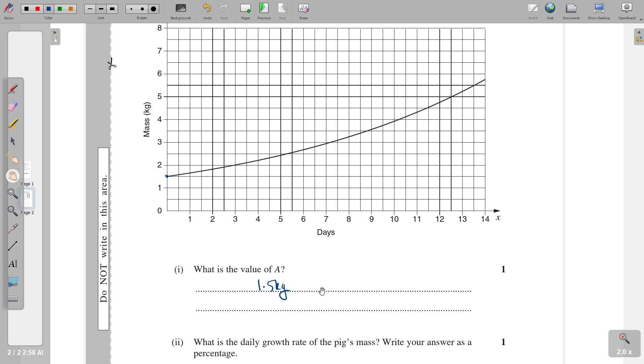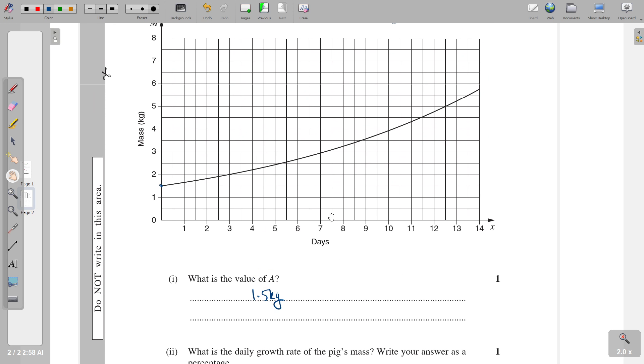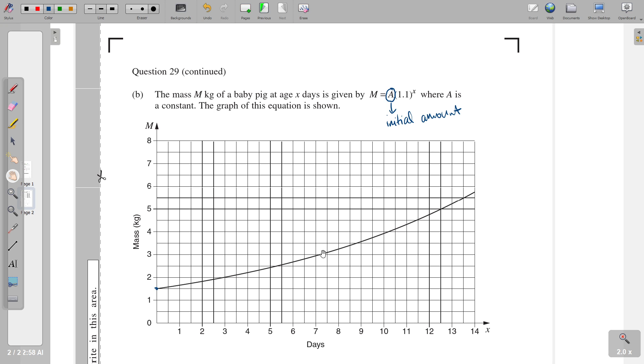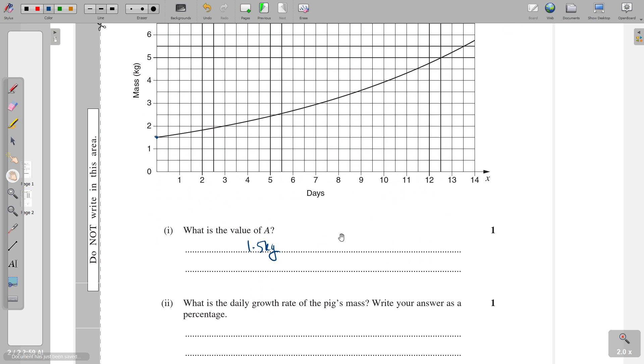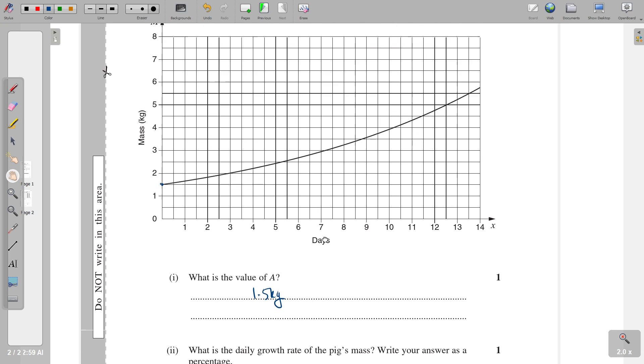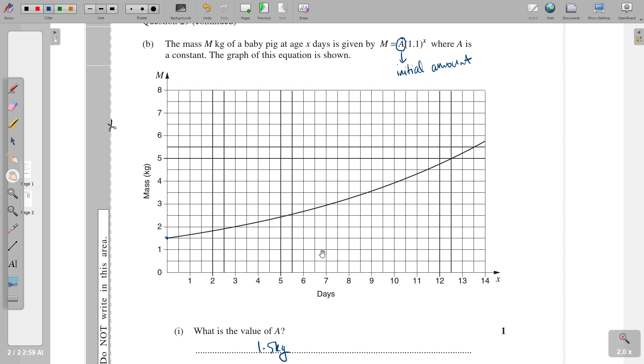And then the next one says, what is the daily growth rate of the pig's mass? So we're tracking the mass of a pig as it grows. And we want to know the daily growth rate as a percentage. Now, it's important that the only way to sensibly answer this is as a percentage, because as we've seen with these graphs, it's actually getting faster and faster and faster. So it's not like we can even write down the growth rate as a mass, as a kilogram number, even if we wanted to, because that's changing the whole time.